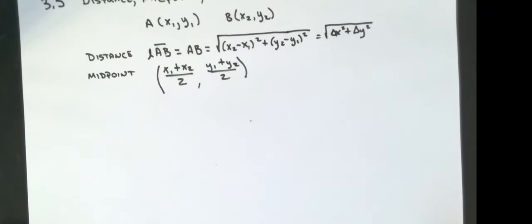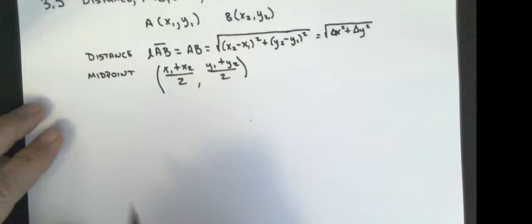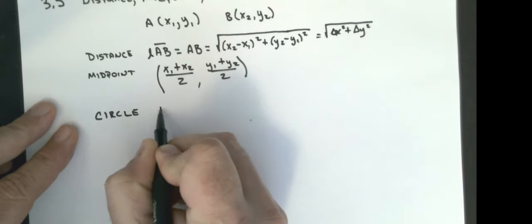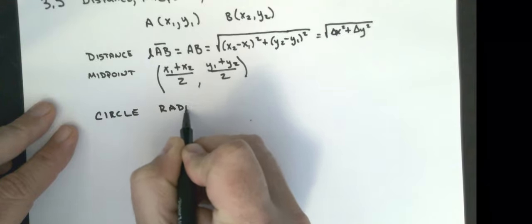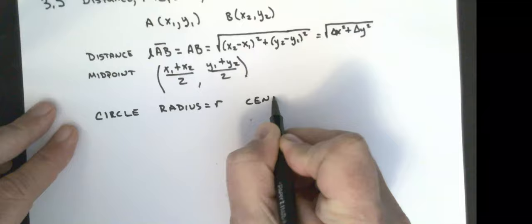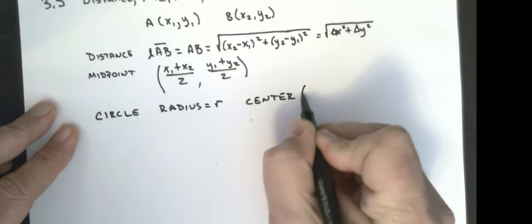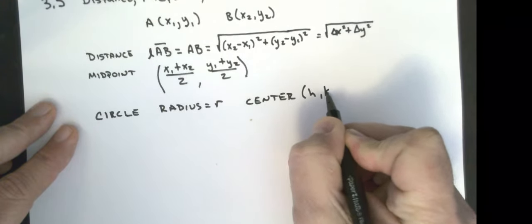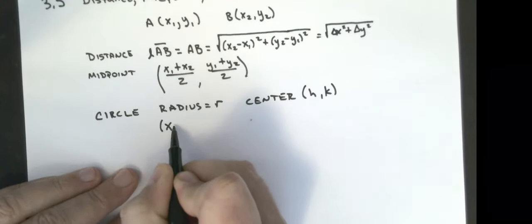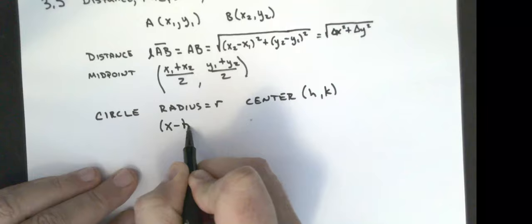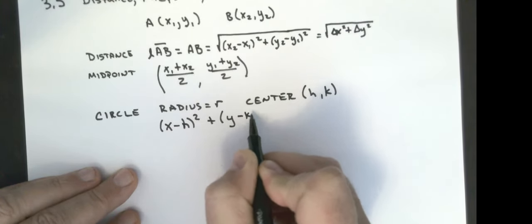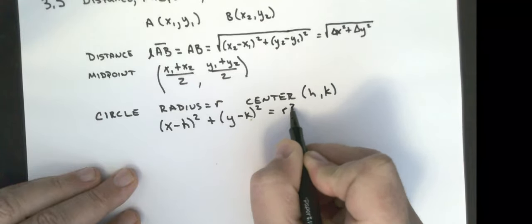And the next formula we're going to go over is the equation for a circle with a radius of R, and its center is at the point h, k. And that equation is x minus h squared plus, open parentheses, y minus k squared equals R squared.